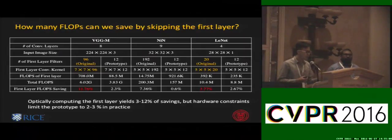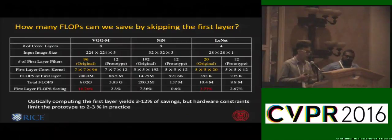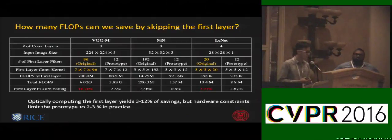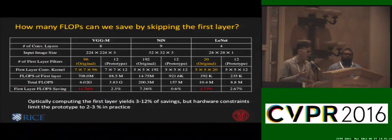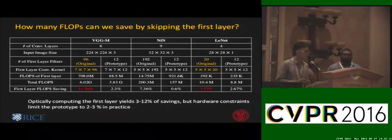However, hardware constraints for the ASP Vision prototype reduce the number of first layer filters, so we see only a modest saving of up to 2.67% in the prototype system.